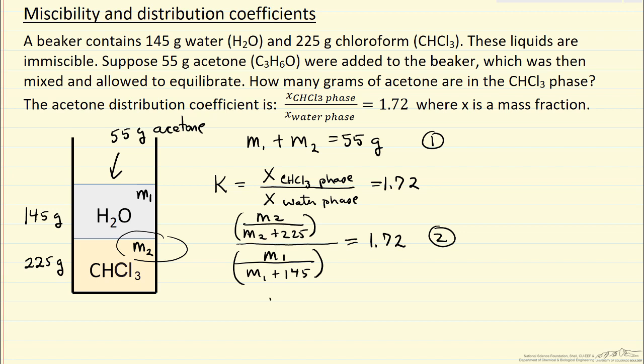And if I do that, I get that M2 is 40.8 grams. That would mean M1 is 14.2 grams. So the majority of acetone is in the chloroform phase, both because we have more chloroform, and because the distribution coefficient favors acetone dissolving in the chloroform phase.